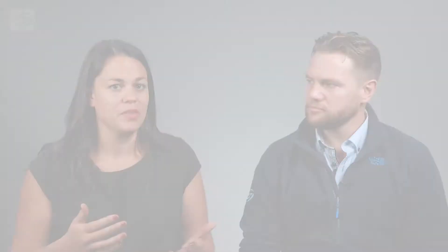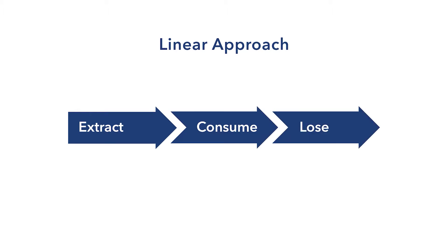It's really talking about our resources and how we use our resources. Now in a traditional system, we have a linear approach to the way we use resources: we extract them, we consume them, and we lose them in a straight line.